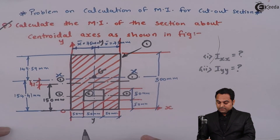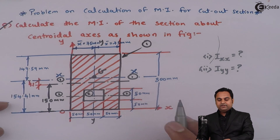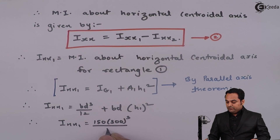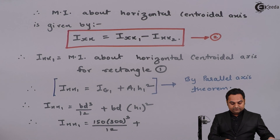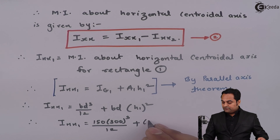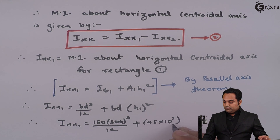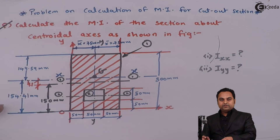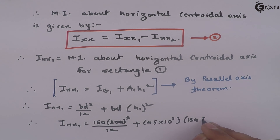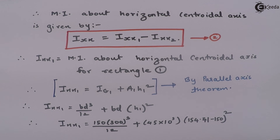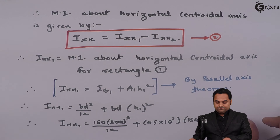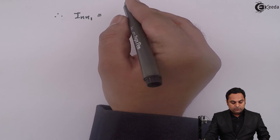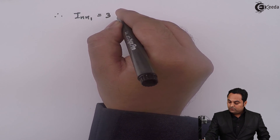For rectangle 1, b = 150 mm and d = 300 mm. Therefore I_xx1 = (150 × 300³)/12 + (45 × 10³) × (154.41 − 150)². Calculating this throughout, I_xx1 comes out to be 338 × 10⁶ mm⁴.